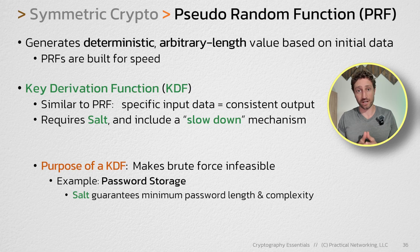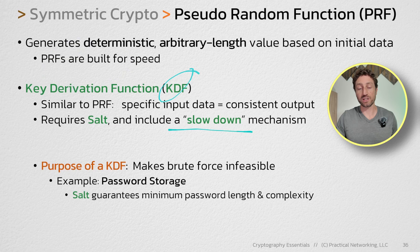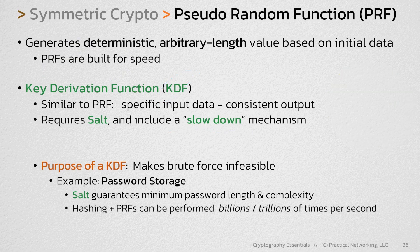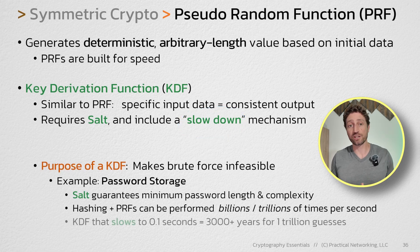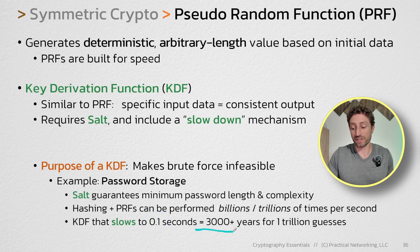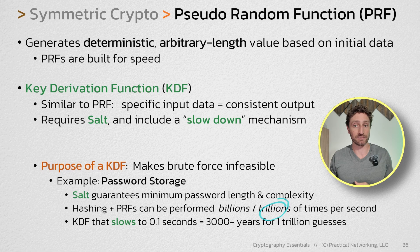But it doesn't stop there. Remember that hashing and PRFs are built for speed, whereas KDFs are intentionally built to slow down. A modern cracking array can run through calculations of hashes or PRFs at a rate of billions or even trillions per second. That's why it's so important to be able to intentionally slow down a particular calculation. If I can slow down each of those calculations to even only take 0.1 seconds, now it'll take over 3,000 years to even do 1 trillion guesses — something that could be done in a single second before. So you can see the benefit of using a KDF instead of a PRF or a hashing algorithm in password storage.